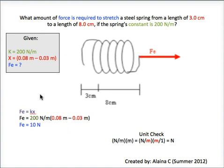The formula we are going to be using is elastic force equals spring constant times the distance the object is stretched. Then we replace the values so elastic force equals 200 N per meter times 0.08 m minus 0.03 m.